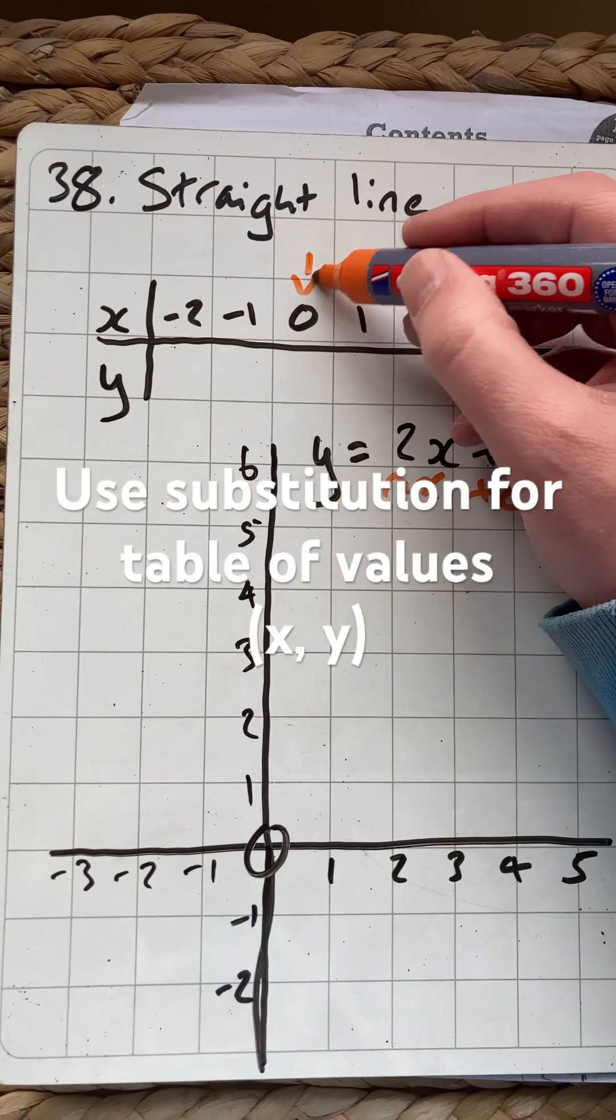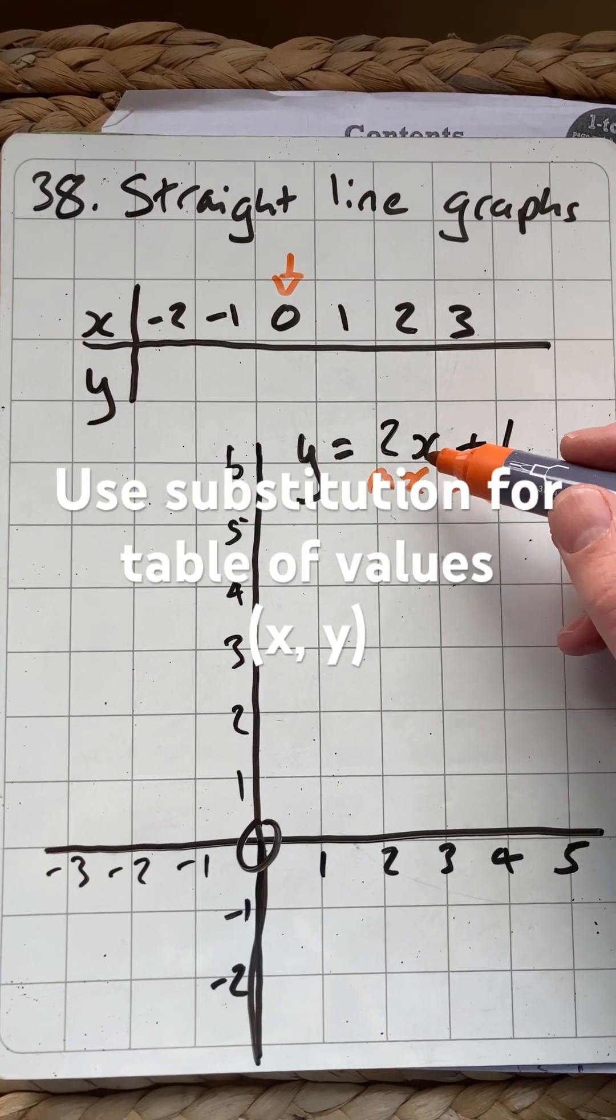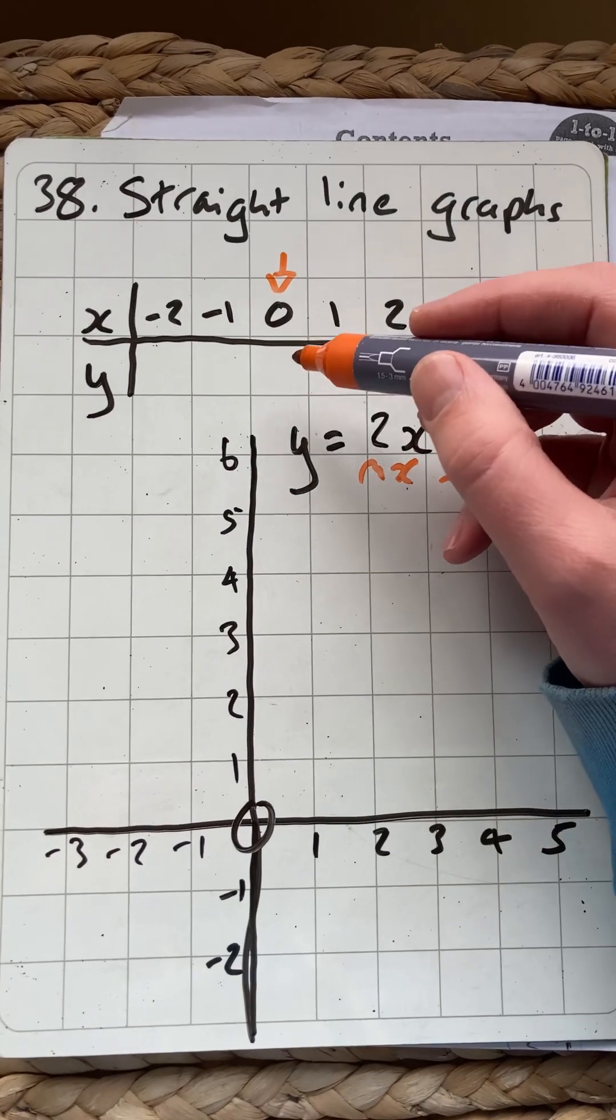Always start with the easiest, start with 0, use substitution. 0 replaces that x, 2 times 0 is 0, plus 1 is 1.